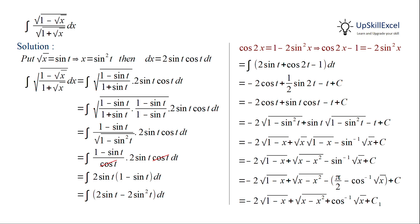Note that we started by substituting √x = sin t. If we had substituted √x = cos t instead, we would have obtained the last result directly.